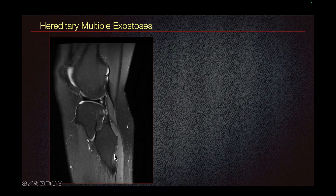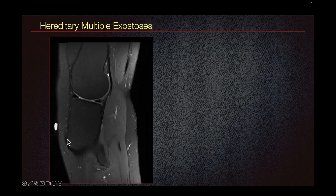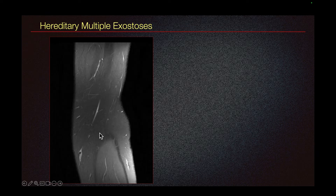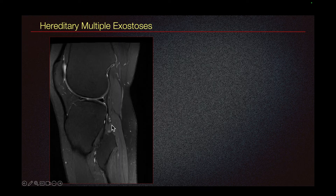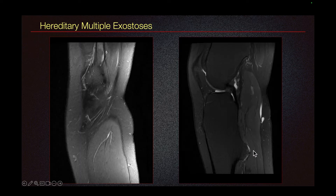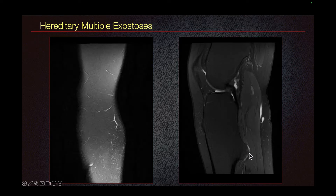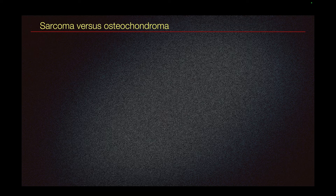Here we can see on the MRI osteochondromas on the fibular head, posterior femur, posterior tibia, and anterior tibia. We can see that this osteochondroma has a cartilage cap and the cortex and the medullary cavity of the underlying bone is continuous. Some aggressive lesions could be mistaken for osteochondroma, but it is important to remember that osteochondroma has medullary and cortical continuity.